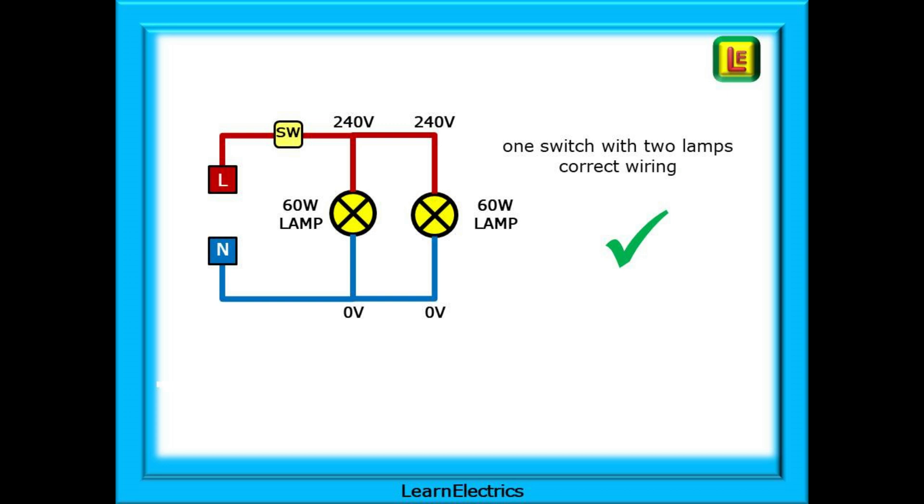Here is a simple schematic drawing for two lamps controlled by one switch. This is a parallel circuit. When the switch is turned on, the same voltage, 240 volts in this case, appears at both the lamps. The other end of both lamps are at zero volts, at neutral.